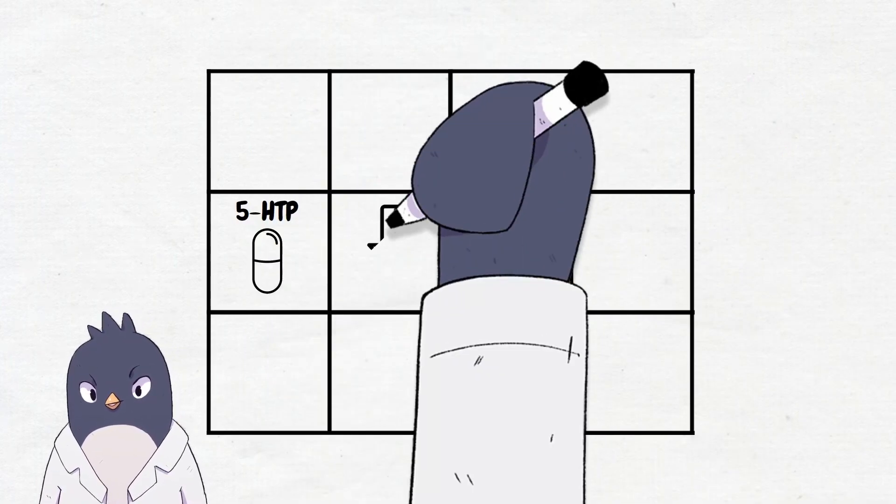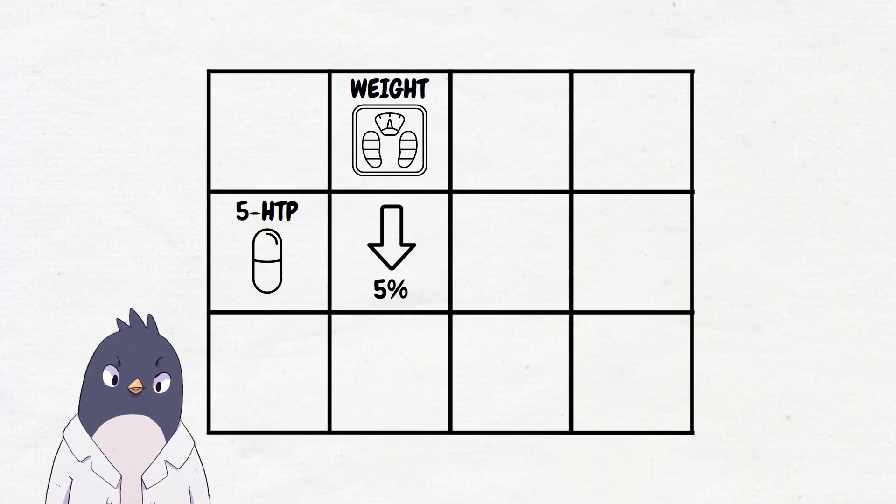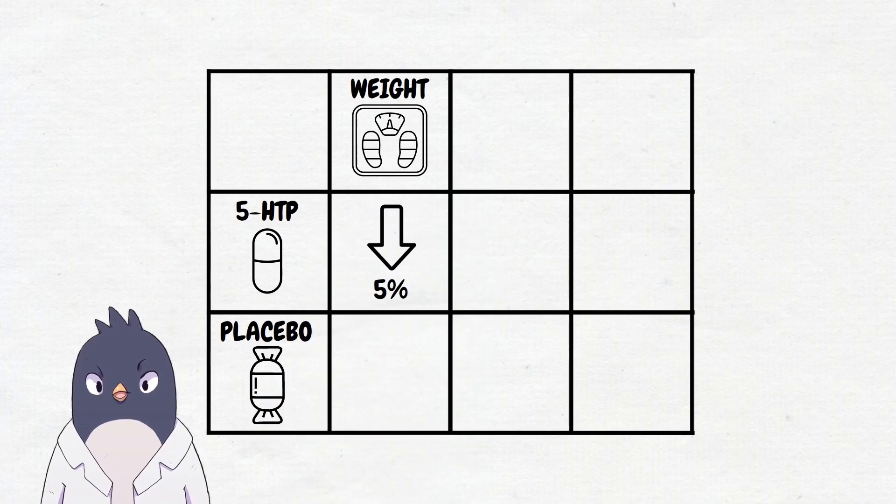The 5-HTP group lost a significant amount of weight, about 5% of their weight over the 12 weeks, while the placebo group had no significant change.